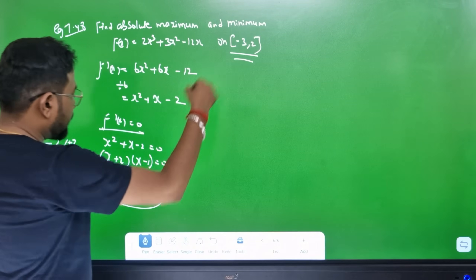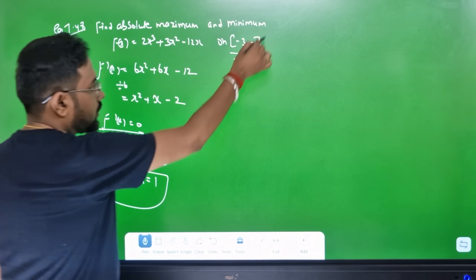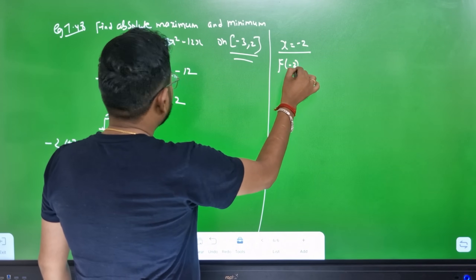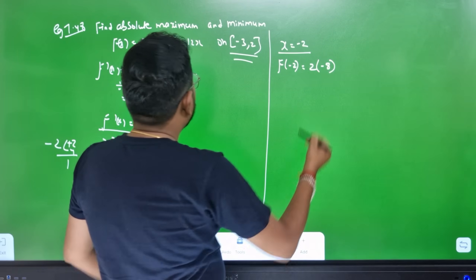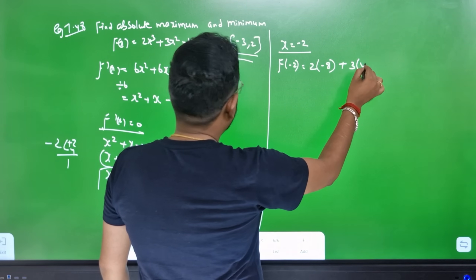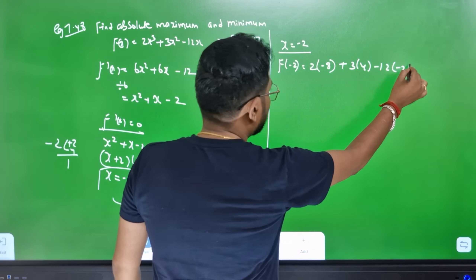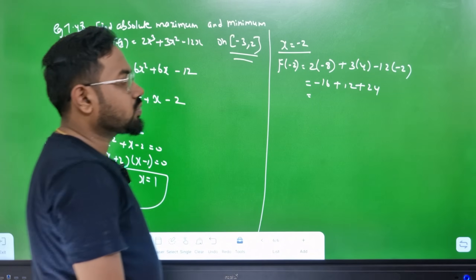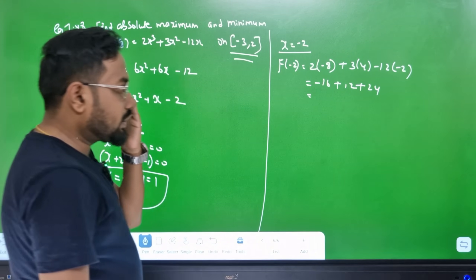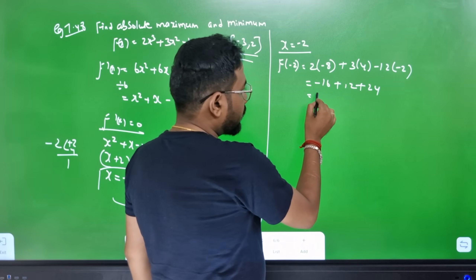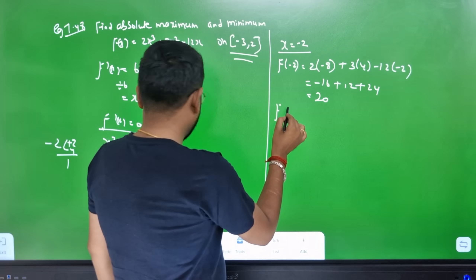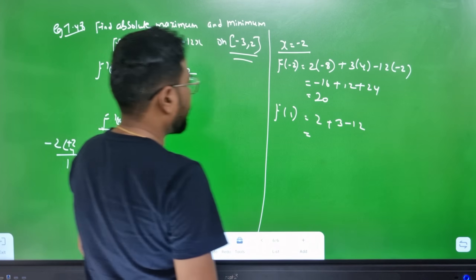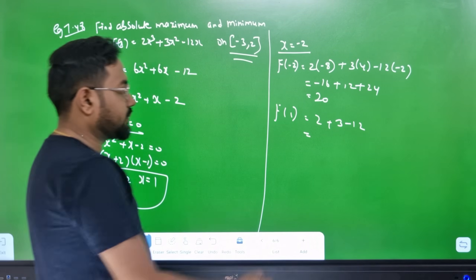Now evaluate f at the critical points and endpoints. f(minus 2): 2 times (minus 2)³ plus 3 times (minus 2)² minus 12 times (minus 2) = minus 16 plus 12 plus 24 = 20. f(1): 2 plus 3 minus 12 = minus 7. f(minus 3): 2 times (minus 27) plus 3 times 9 minus 12 times (minus 3) = minus 54 plus 27 plus 36.